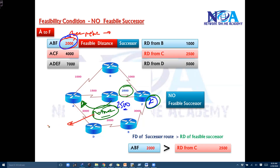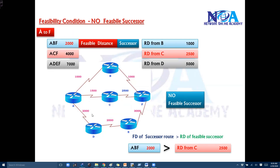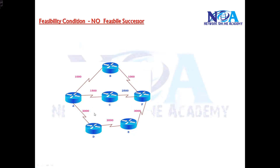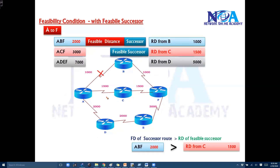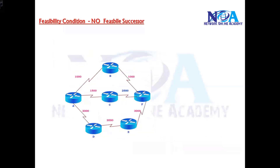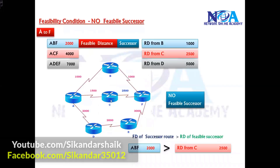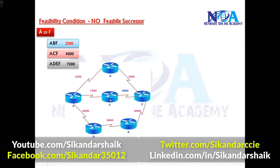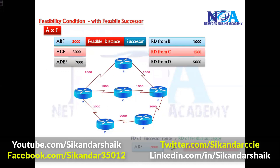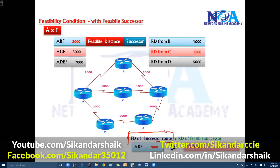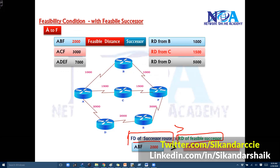EIGRP will assume it might be a routing loop when an update advertises a higher cost, even if it isn't actually looping. So it will not record that as the second best route. If the condition is satisfied and the best route fails, EIGRP immediately uses the feasible successor. To summarize: the feasibility condition states that the FD value of the successor route should always be greater than the reported distance of the feasible successor.